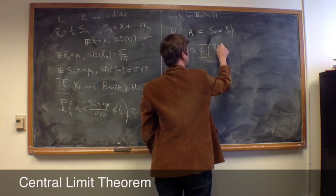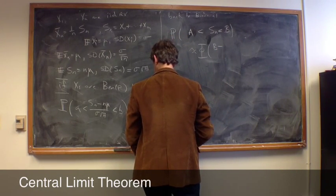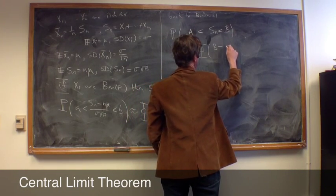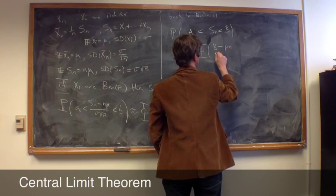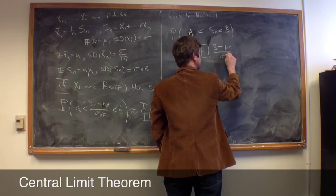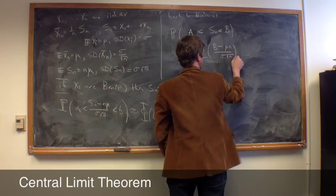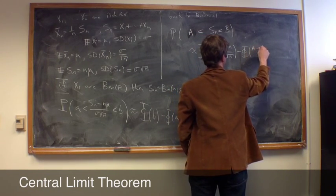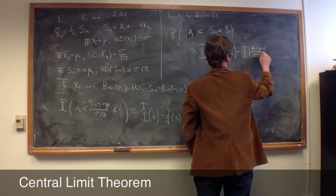b minus the mean, which was, let's just write mu n again, and then we divided that by sigma times the square root of n, and we subtracted that from phi of a minus the mu n over sigma square root of n.